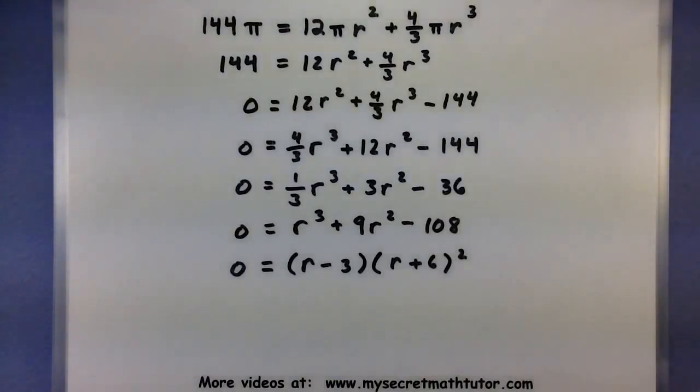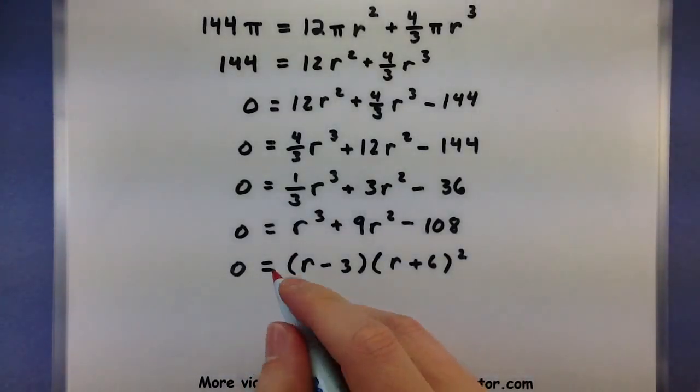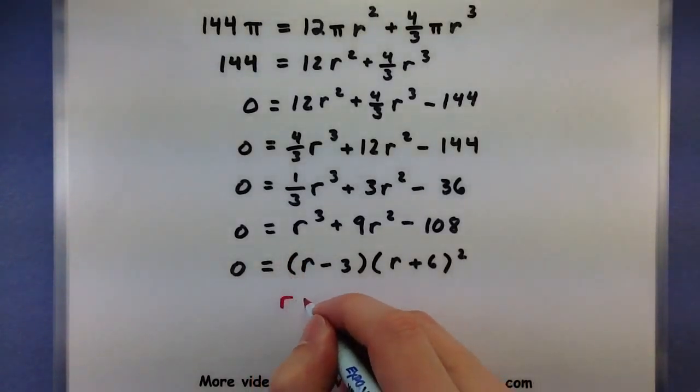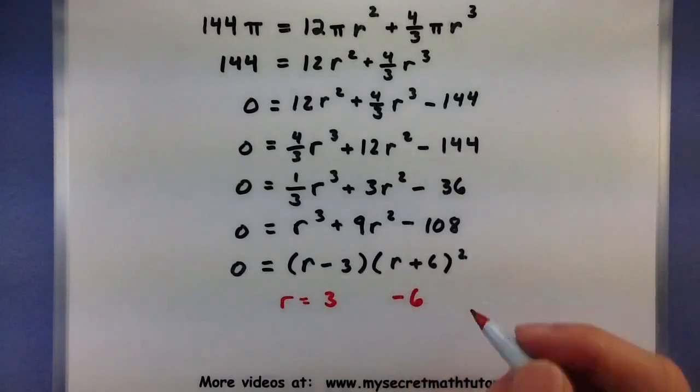Now, when looking at this in its factored form, I know that it's equal to 0 when either this factor is equal to 0 or when this factor is equal to 0. So when r is equal to 3 or when it's equal to negative 6.